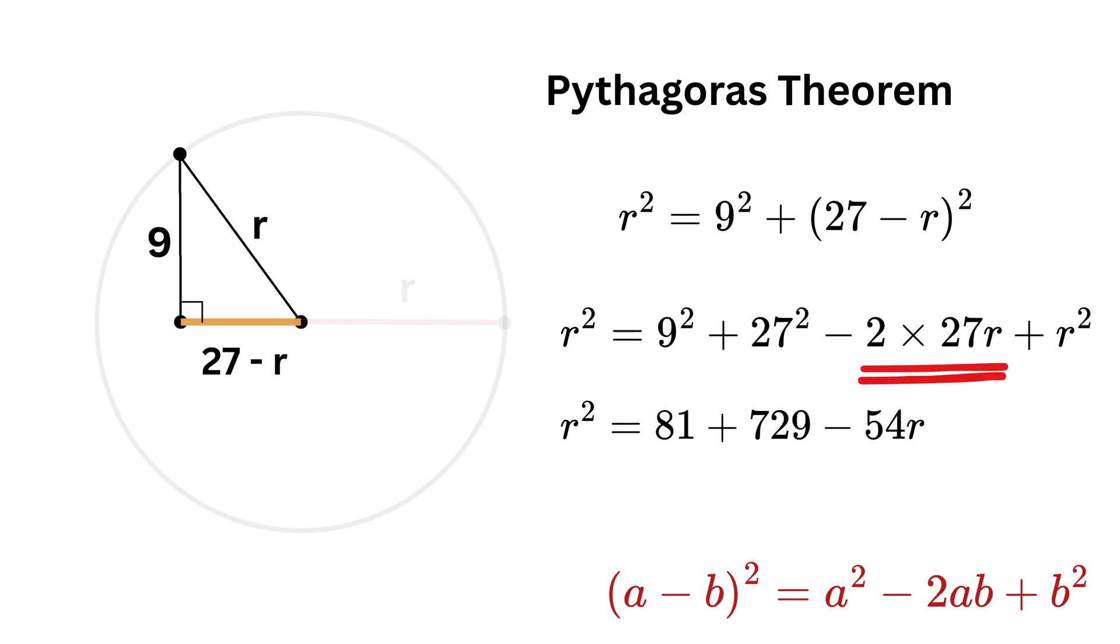And this will be minus 54 times r plus r squared. Oh, r squared gets cancelled out! Now take this minus 54r on the left side to get 54r equals the sum of both these numbers, which will be 810.